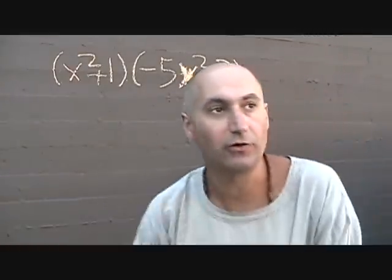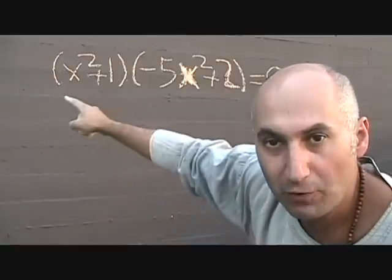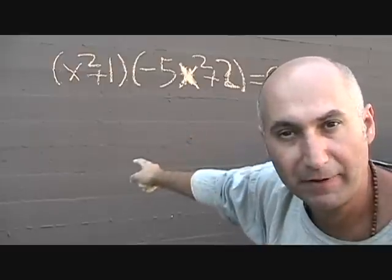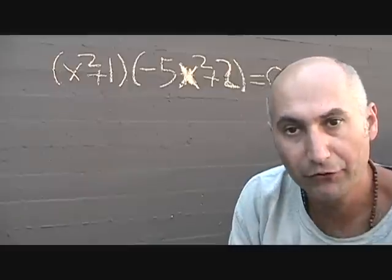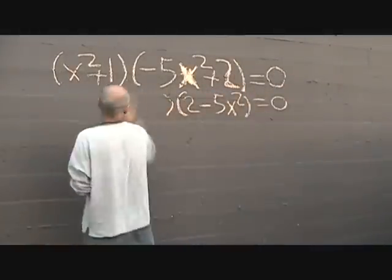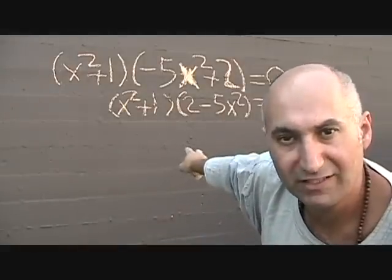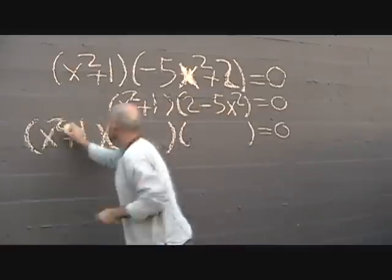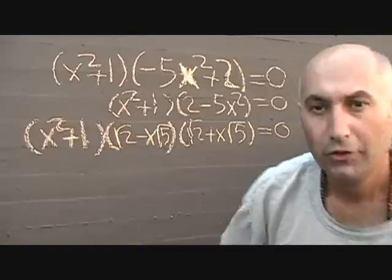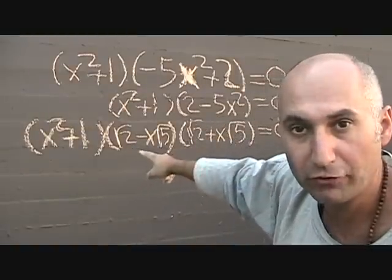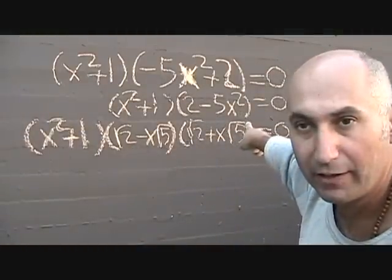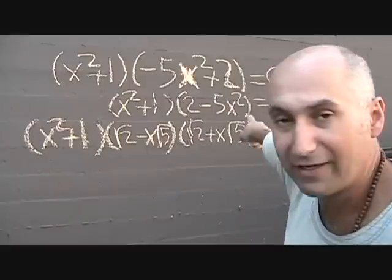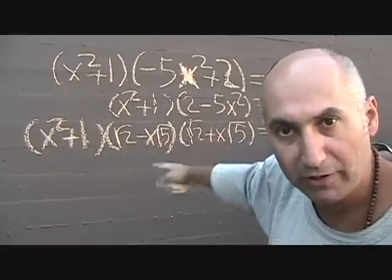So we're going to set it equal to zero and solve it. The first factor, x² + 1, we can't factor anymore, so we leave it. We rewrite the second factor as (2 − 5x²) because it's a difference of squares, and then we take the square root of both terms. The square root of 2 stays as √2, since 5 is prime the √5 stays inside the radical, and the square root of x² comes out as just x.